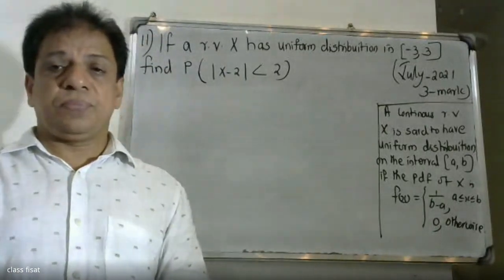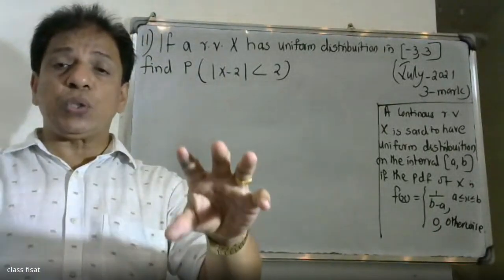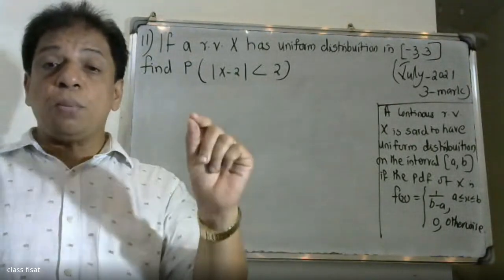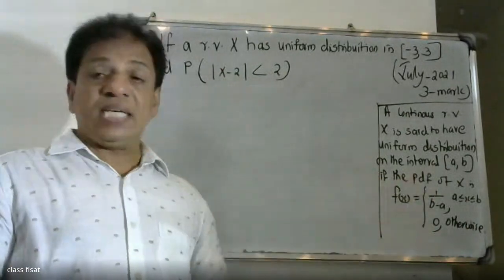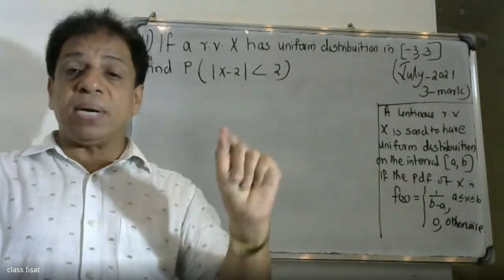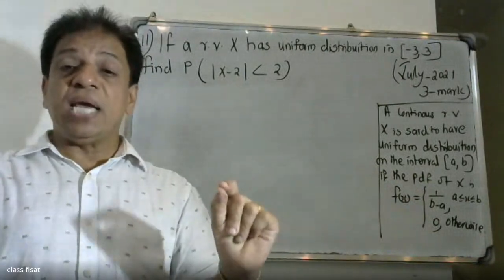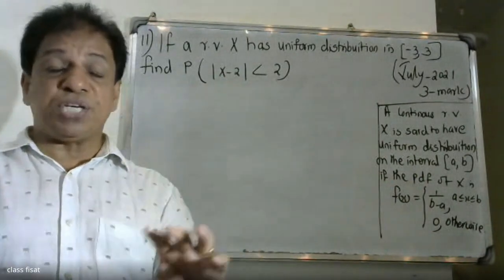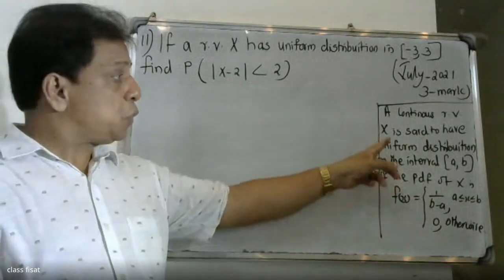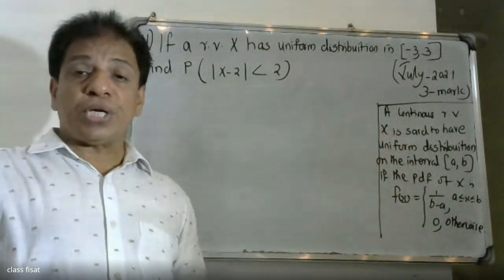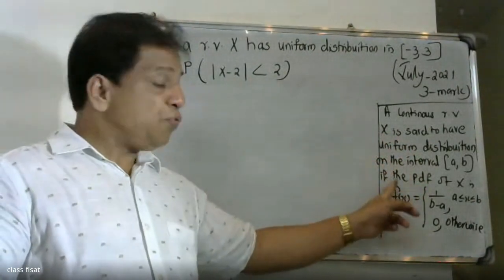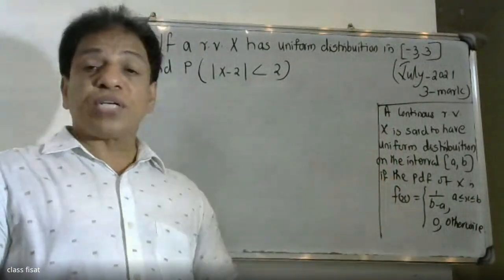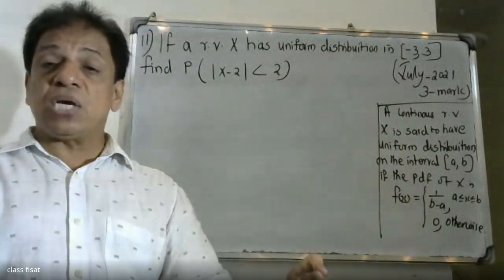For a continuous random variable X, it is said to have uniform distribution on the interval (a, b) if the probability density function of X is f(x) = 1/(b minus a), for a less than or equal to x less than or equal to b, and 0 otherwise.